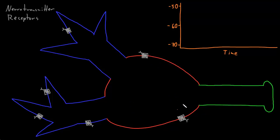I've drawn a neuron with a soma in red, and I've blown up an axon in green, and I've blown up two large dendrites in blue. Here's our graph looking at the membrane potential on the y-axis. I've put in a few values in millivolts: negative 50, negative 60, and negative 70. And we'll have time on the x-axis.